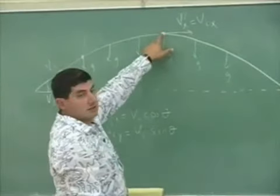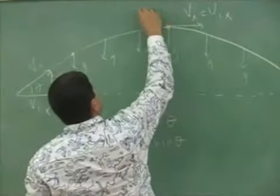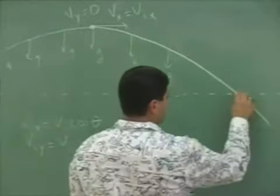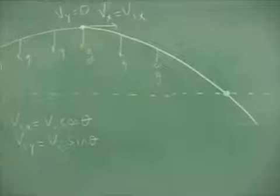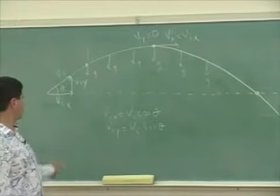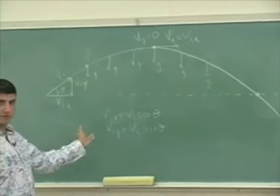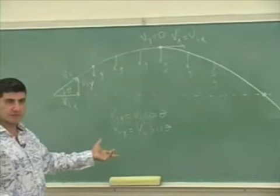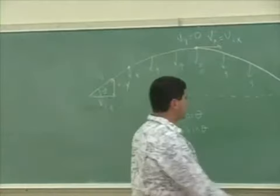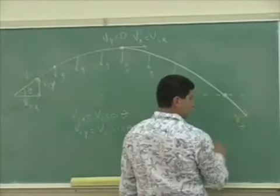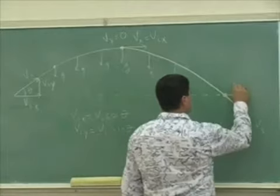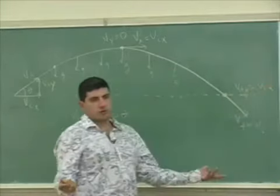At the top of the path, the y component of velocity is zero. By symmetry — ignoring air friction — by the time the object returns to the same height from which you threw it, it should have the same speed: v-final equals v-initial. The x component of the final velocity equals the initial x component, which never changes.